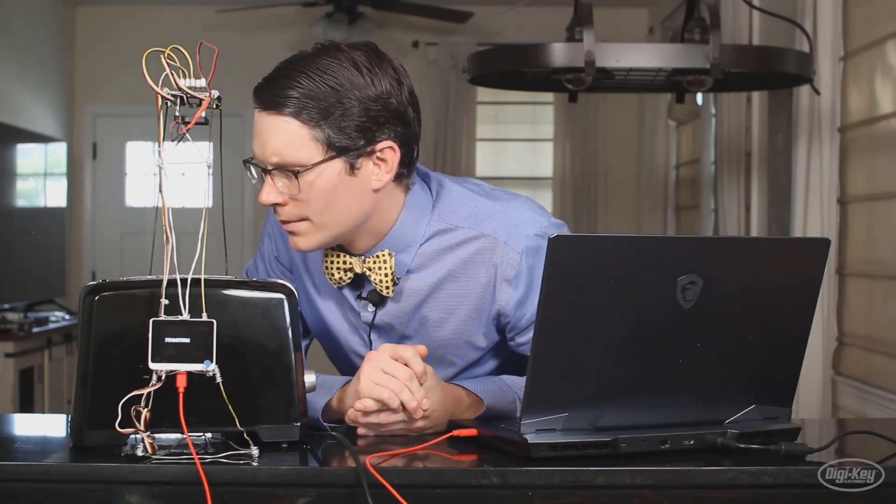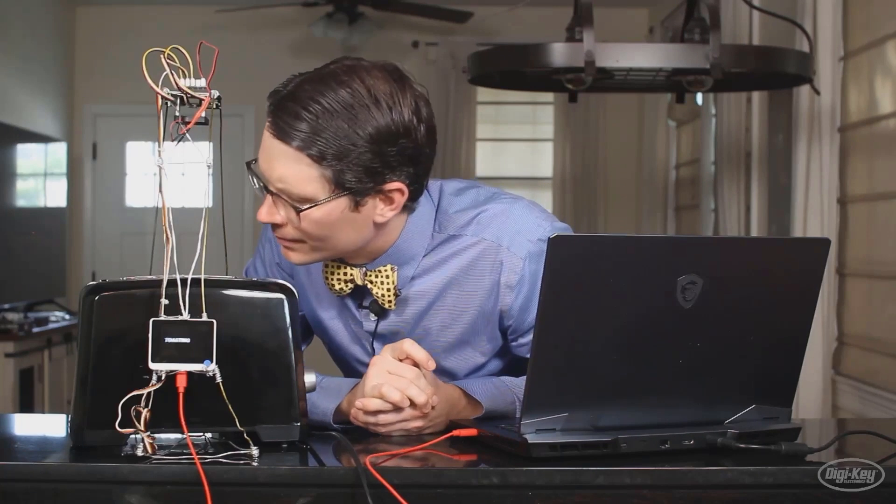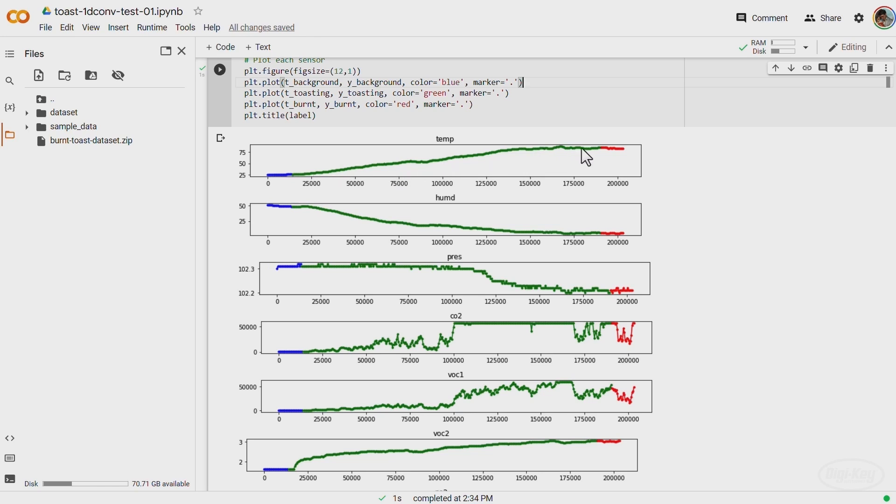The process begins by teaching the machine learning model the precise point when the bread shifts from toasted to burnt. And it's neat to be able to analyze all the different data streams, humidity, CO2, and volatile organic compounds.